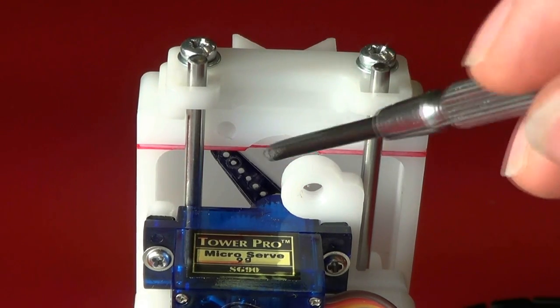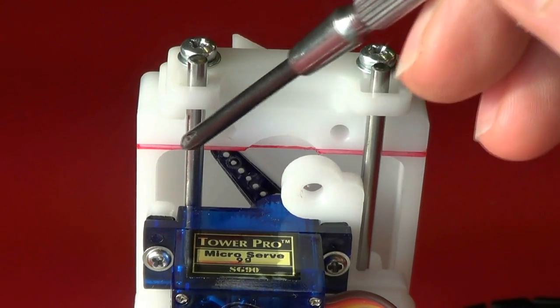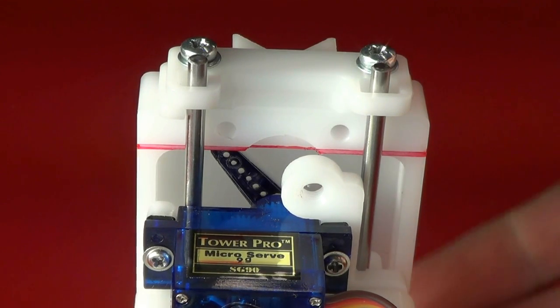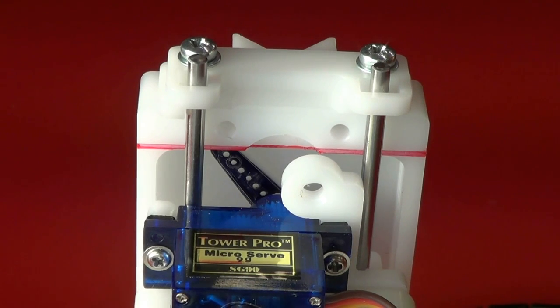I've coloured the servo arm black and put a red line on the underside of the penslide body, so it's a bit more obvious just where the servo arm is positioned.